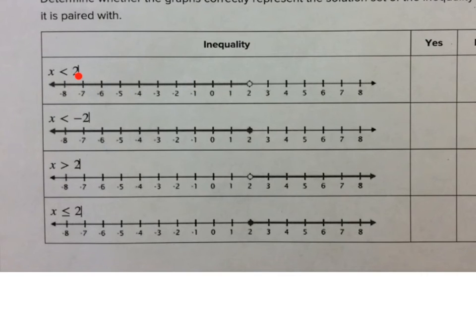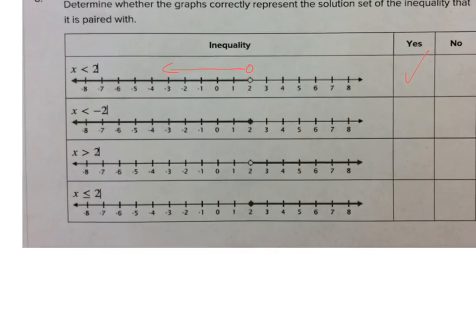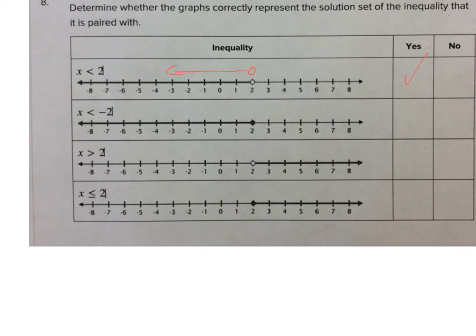So the first one I look at is x is less than 2. Since I can write on here, I would go to 2, and there should be a circle there, and it should not be filled in. And then less than means everything to the left of it, and that's exactly what's here. So yes, that one is correct. The next one, x is less than negative 2. So I come here and I see it should be at negative 2, but I see it's a solid circle and it shouldn't be solid. It should be an open circle, and it's a positive 2, not negative 2, and then it should go this way. So this would be the correct graph. This is the wrong graph, so no.